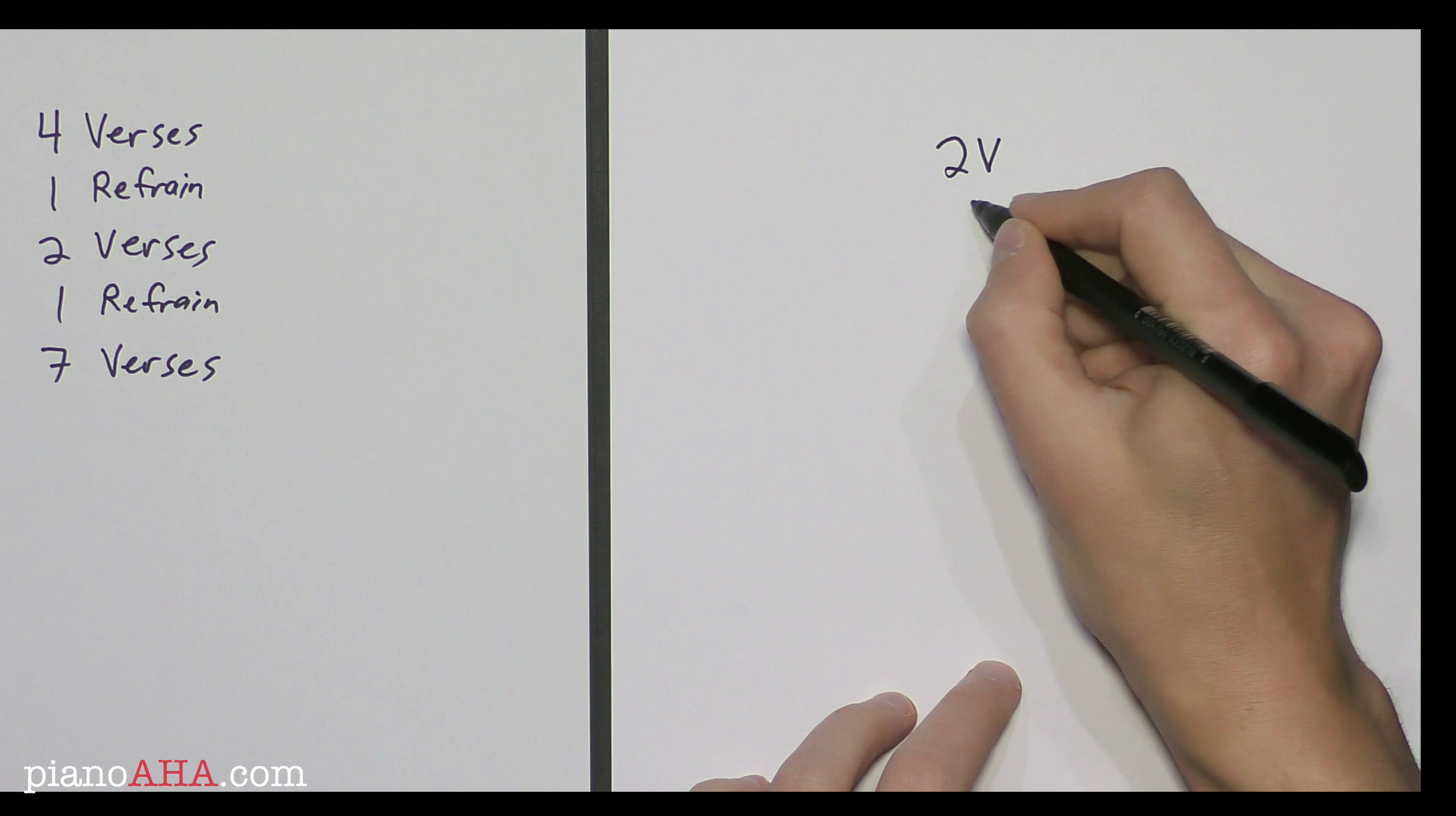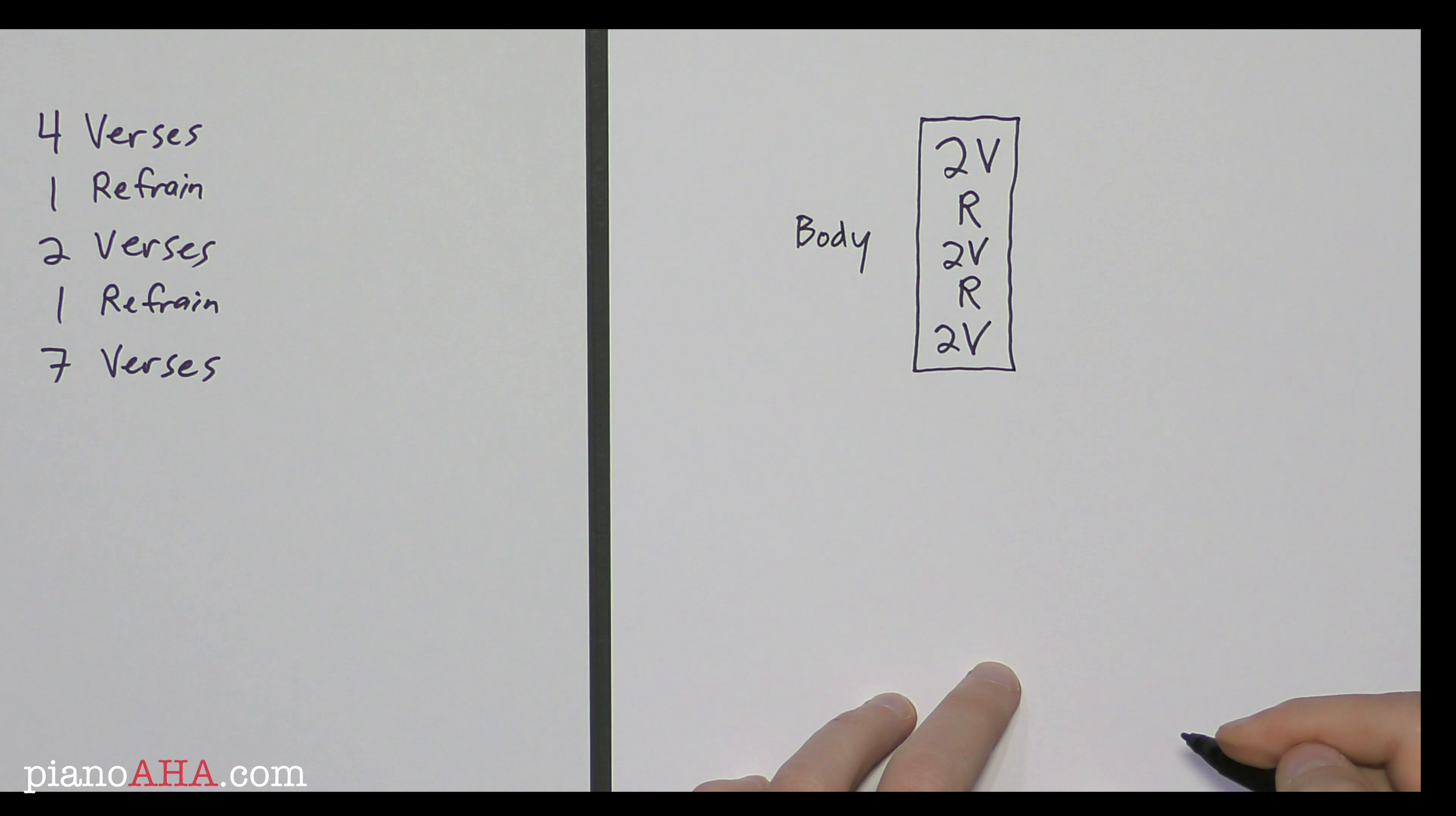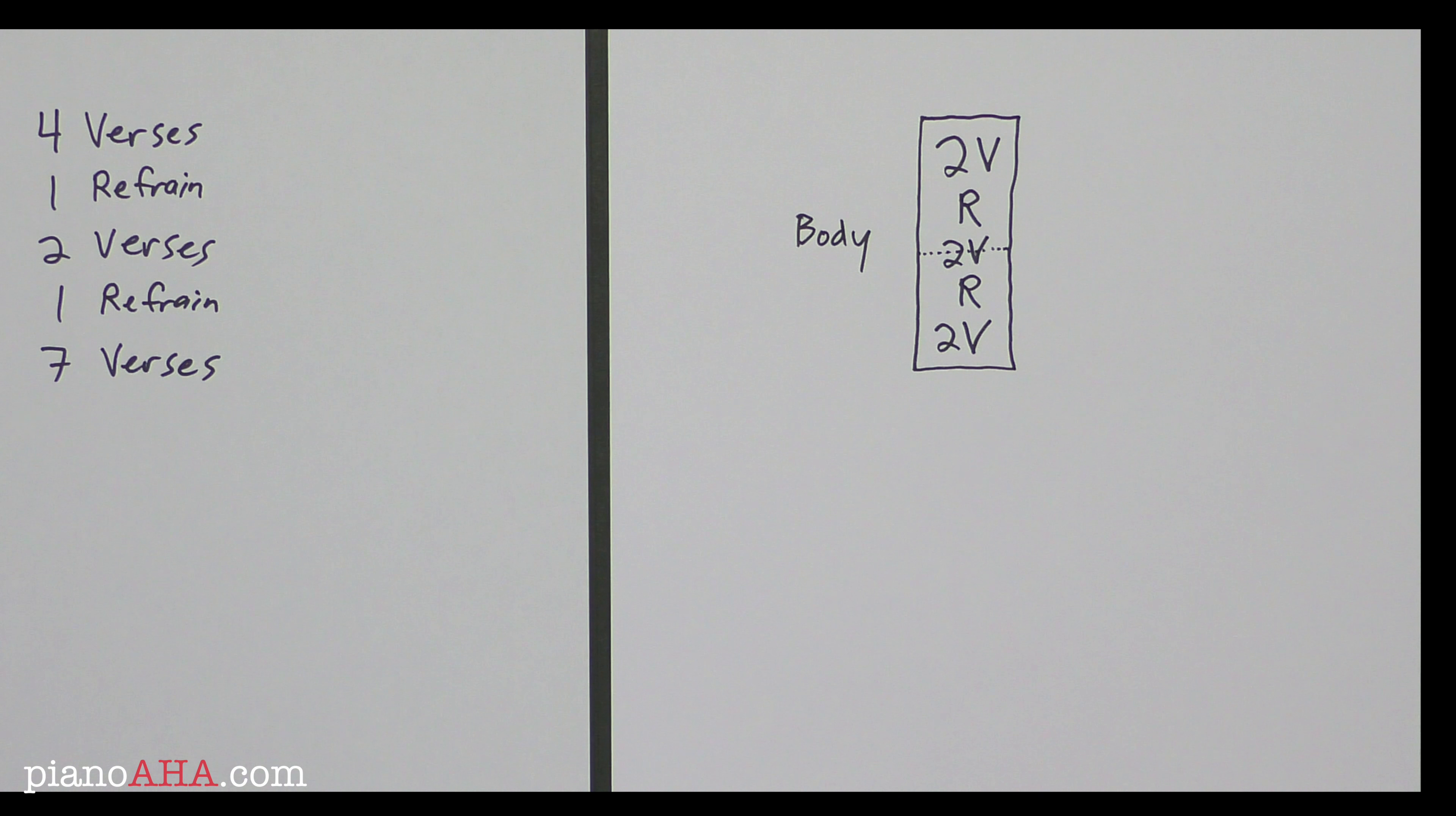Two verses, one refrain, two verses, one refrain, two verses. That is the structure to the body of the song. It has a nice mirror structure, actually. We have two verses at the top and the bottom, a refrain, and two verses exactly in the middle. Now, of course, that's missing something now.